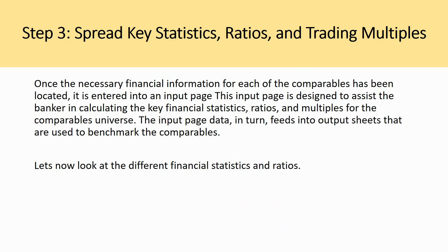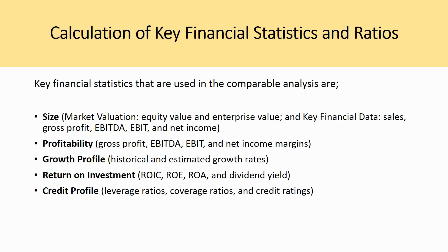In step three, once the necessary information for each comparable has been located, it is entered into an input page designed to help the banker calculate the key financial statistics, ratios, and multiples for the comparable universe. Key financial statistics include, from a size perspective: equity value, enterprise value, sales, gross profit, EBITDA, and EBIT. From a profitability perspective: gross profit margin, EBITDA margin, and EBIT margin. From a growth profile: historical and estimated growth rates. Return on investment includes ROIC, ROE, and ROA. And from a credit profile: leverage ratios, coverage ratios, and credit ratings.